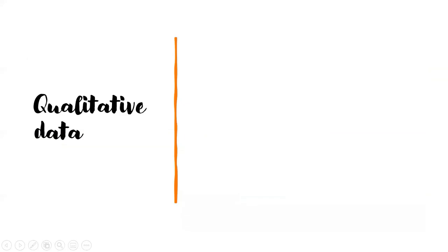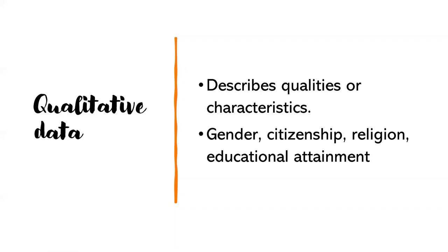So let's talk about first the qualitative data. Qualitative data describes qualities or characteristics. Examples are gender, citizenship, religion, educational attainment. Just describing qualities.